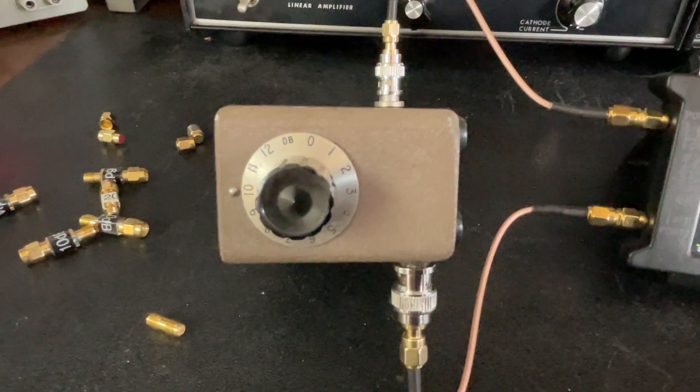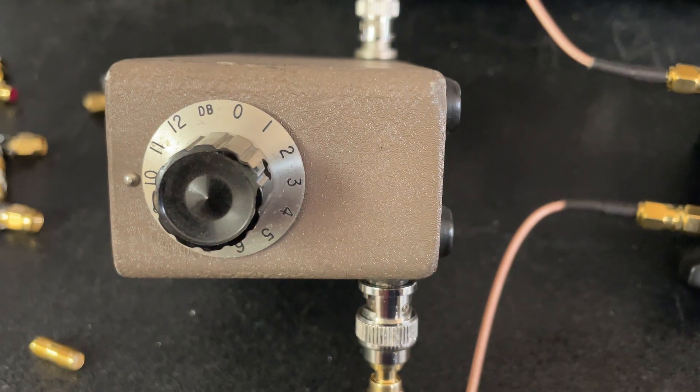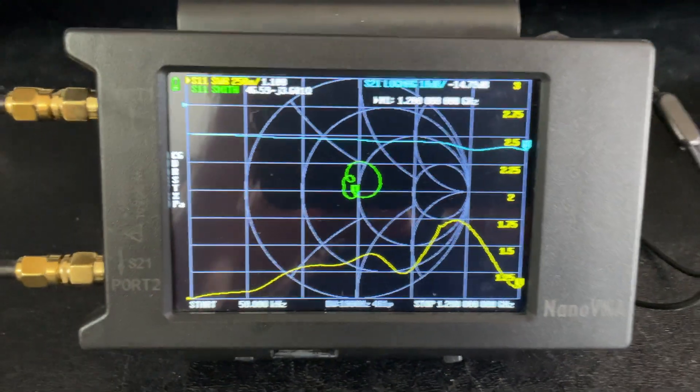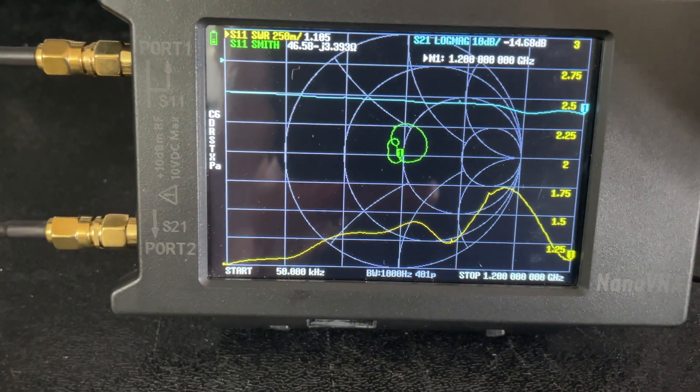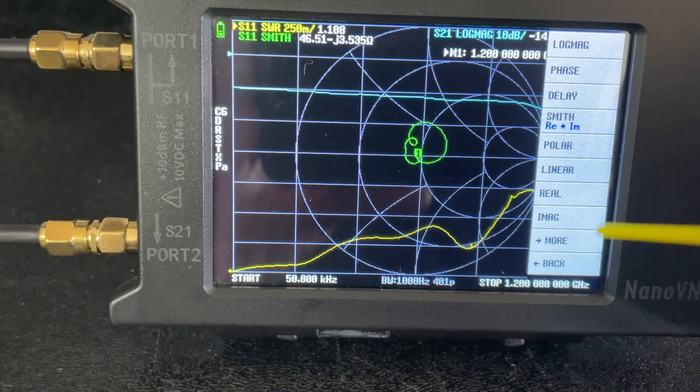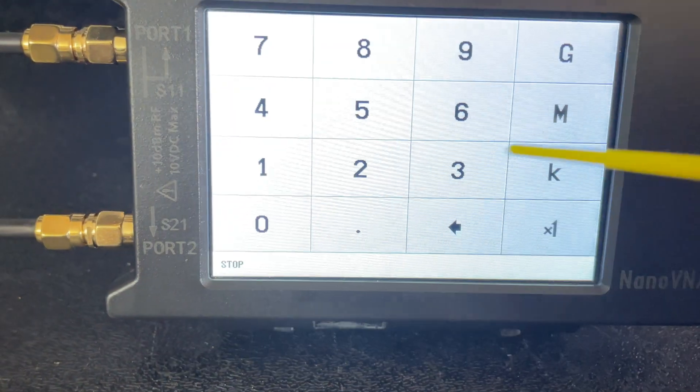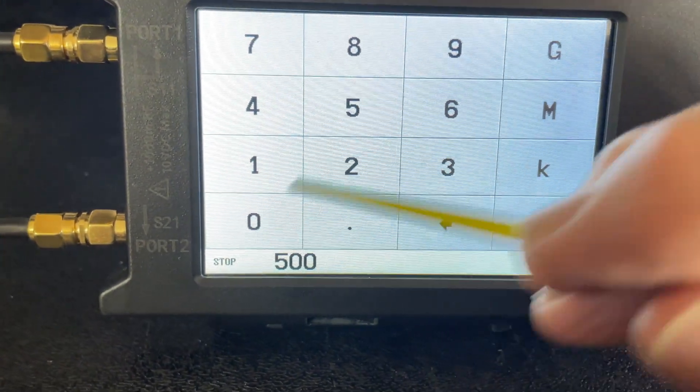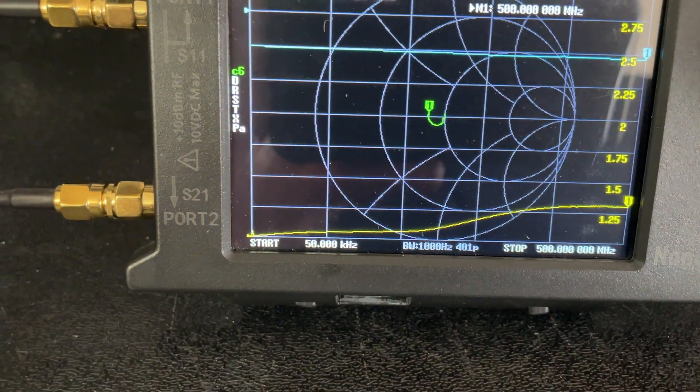Okay, we got this variable pad attenuator connected up. It's not a fair test right now because they say it's only good to 500 megahertz. So let's change that to be fair. Let's go here, stimulus. Let's stop it at 500 megahertz.